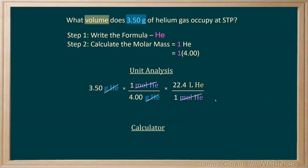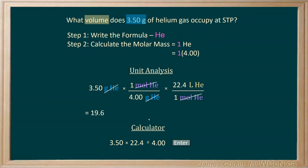So when you reach for your calculator, you're going to go 3.50 multiplied by 22.4 and divided by 4, which gives you an answer of 19.6 liters of helium gas.